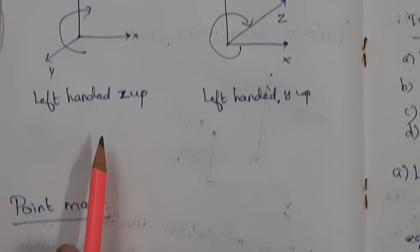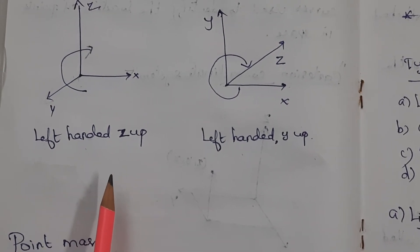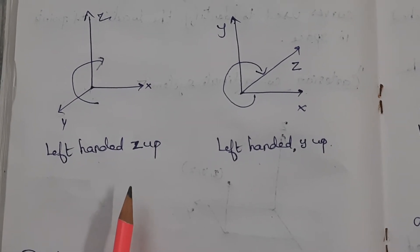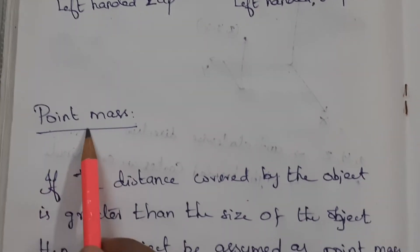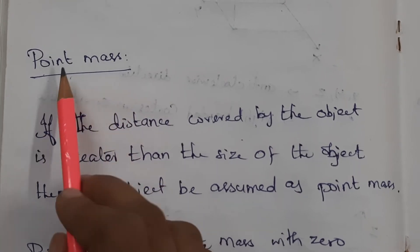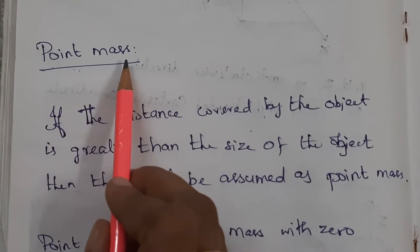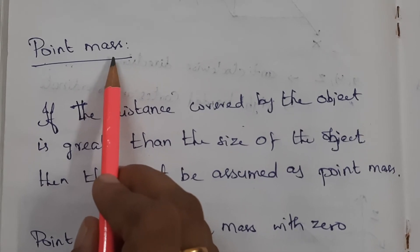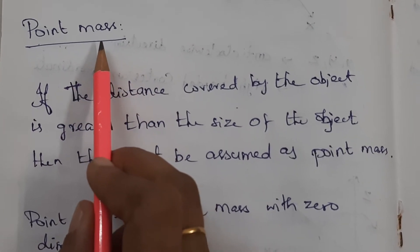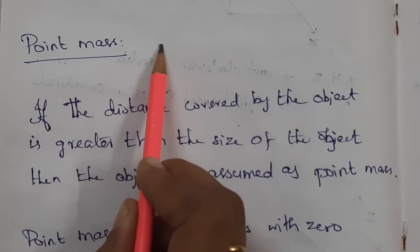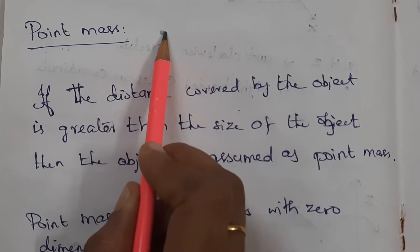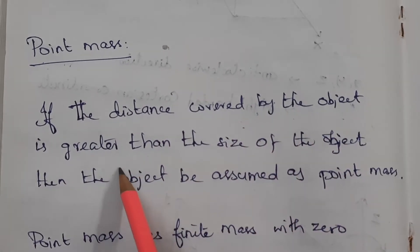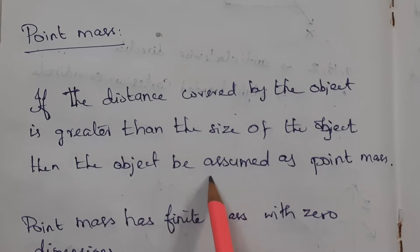So we have seen: kinematics, concept of rest and motion, frame of reference, and Cartesian coordinate system. Next concept: point mass. To explain the motion of an object, a point mass is required. The bigger objects can be treated as a small point in which the mass of the object is assumed to be concentrated. If the distance covered by the object is greater than the size of the object, then the object can be assumed as a point mass.